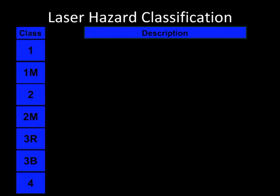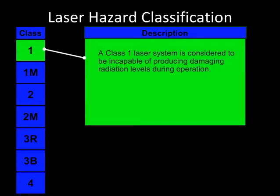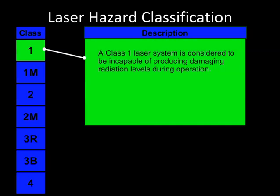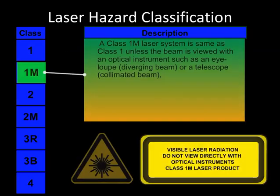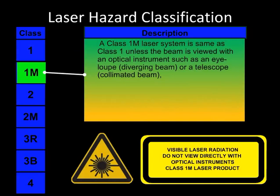Class 1: Not considered capable of causing an injury. Class 1M: Not considered capable of causing an injury except when viewed through specific types of magnifying optics such as a hand magnifier or telescope.